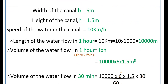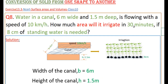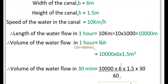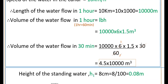That is equal to 10,000 into 6 into 1.5 meter cube, and this is in one hour, that means 60 minutes. But here we have to find in 30 minutes. So volume of the water flow in 30 minutes is equal to 10,000 into 6 into 1.5 into 30 by 60. Multiplying: 3 into 1.5 is 4.5, so that gives 4.5 into 10,000 meter cube.